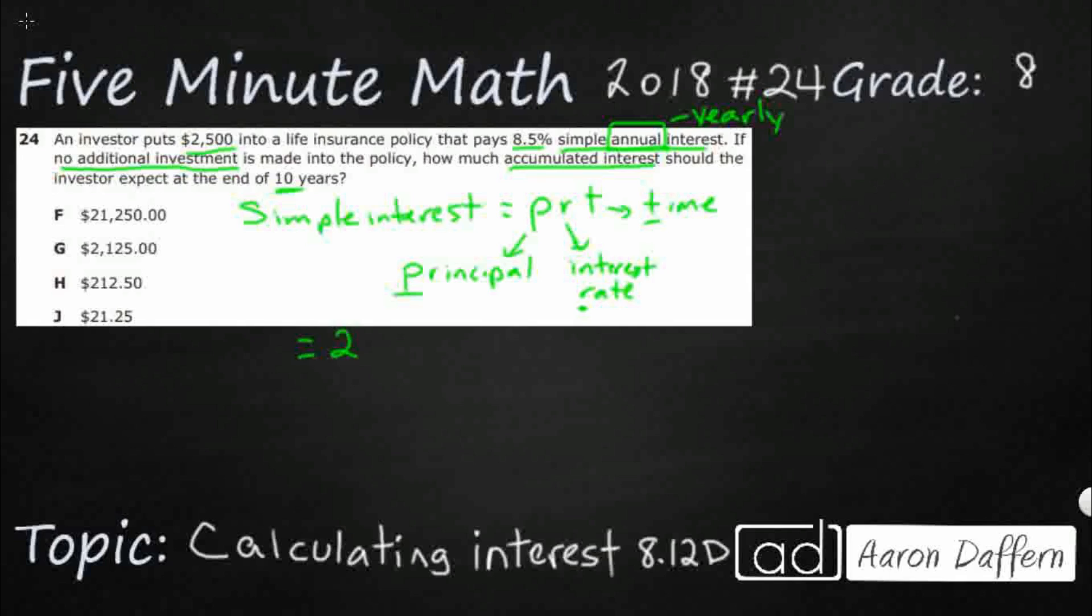So I'm going to come down here, principal $2,500 and we're going to multiply that by our rate. Now our rate is 8.5, but when we're multiplying, we don't multiply by a percent. We need to turn that percent into a decimal. So 8.5% thankfully already has the decimal in there for us. We're going to move it over once, we're going to move it over twice.